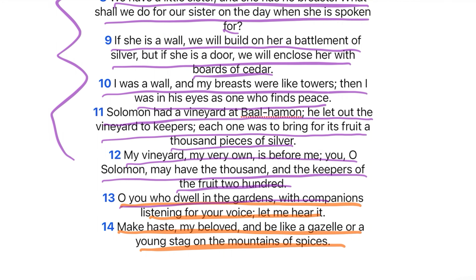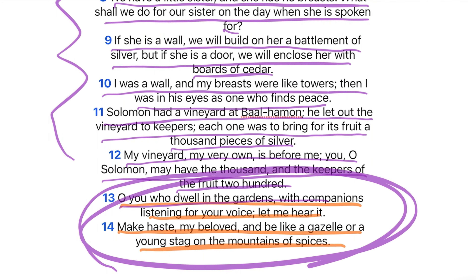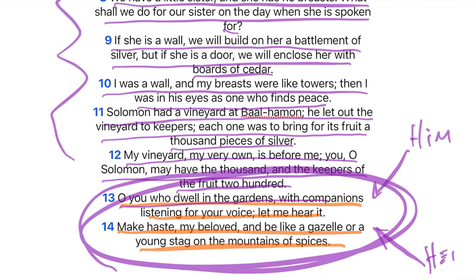This is probably him in verse 13 and then her in verse 14 — this is how the New American Standard used to break it up. 'O you who dwell in the gardens, with companions listening for your voice, let me hear it.' And then she says, 'Make haste, my beloved, and be like a gazelle or a young stag on the mountains of spices.'